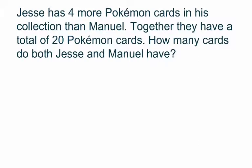Let's try another one. Jesse has four more Pokemon cards in his collection than Manuel. Together they have a total of 20 Pokemon cards. How many cards do both Jesse and Manuel have? Let's get our equations going. I'm going to use J and M for the variables to start with. If we take Jesse's value and subtract Manuel's, it would equal four, because Jesse has four more. So whatever those numbers are, the subtraction gives us four.